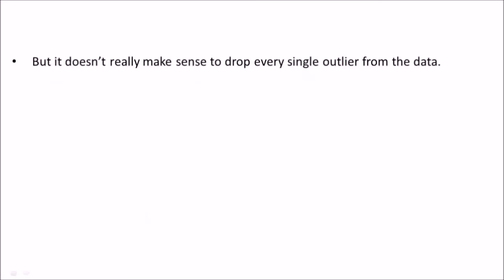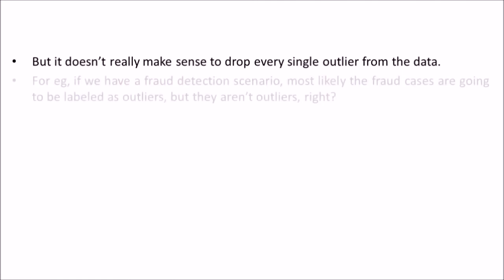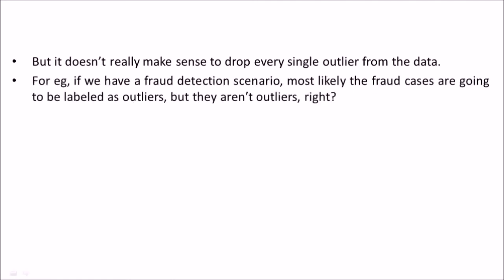But it doesn't make sense to drop every single outlier from the data. For example, in a fraud detection scenario, most fraud cases are likely to be labelled as outliers. Because if somebody has stolen a credit card, they will try to go to another area, state, or country to do the transaction, and the transaction amount might also be high. So those will appear as outliers, but they are not really outliers — they are actually the main basis of this machine learning problem to detect fraudulent cases.